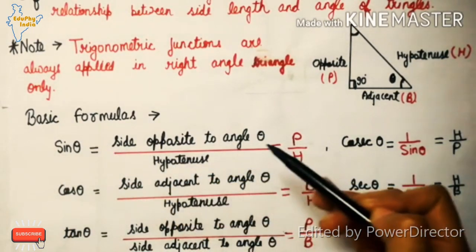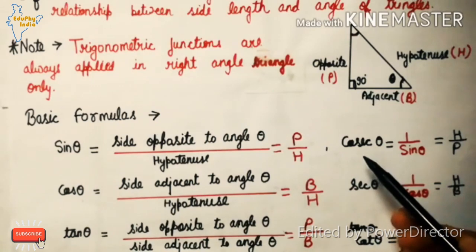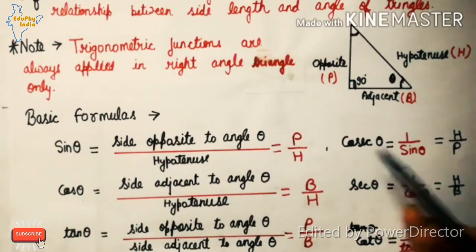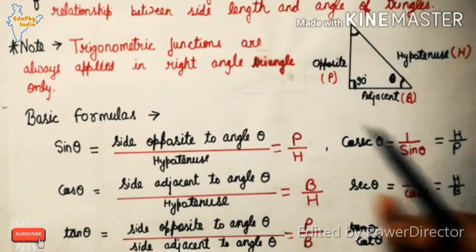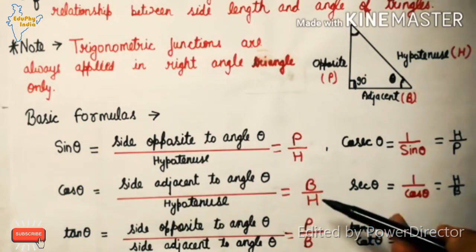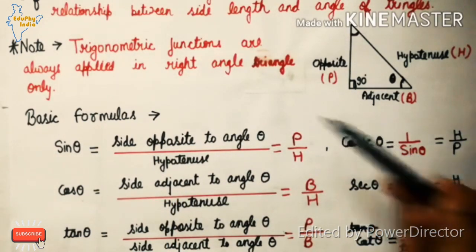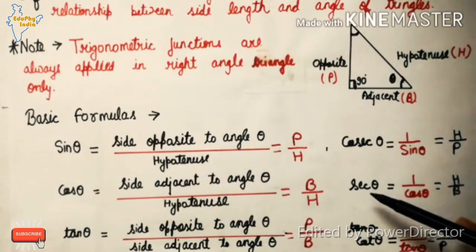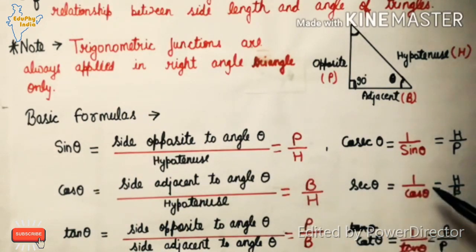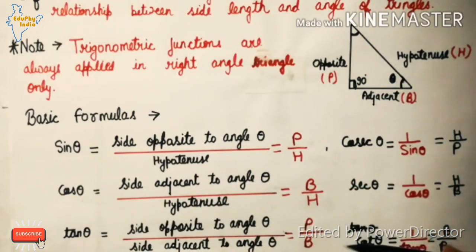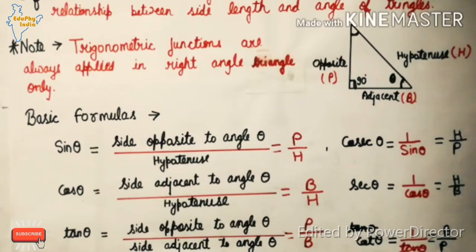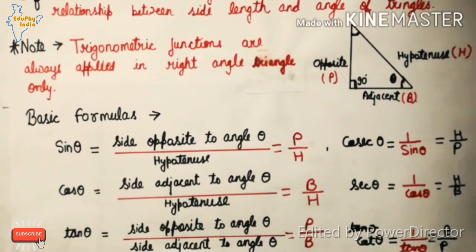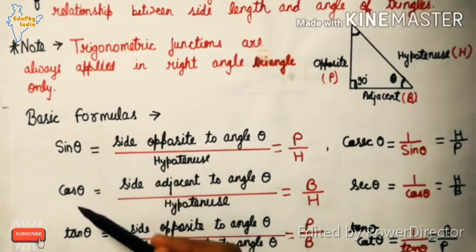The opposite of sin theta is cosec theta. So if sin theta is P upon H, then cosec theta becomes H upon P. If cos theta is B upon H, then sec theta, which is the opposite of cos theta, becomes H upon B. And the opposite of tan theta gives us cot theta, which is B upon P.